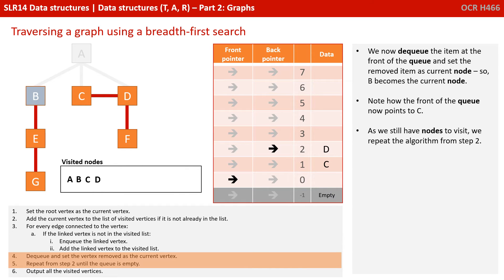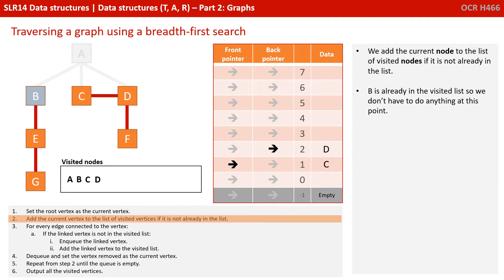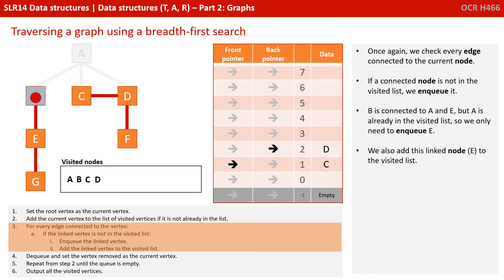We now dequeue the item at the front of the queue and set the removed item as the current node, so B becomes the current node. Note how the front of the queue now points to C. As we still have nodes to visit, we repeat the algorithm from step 2. We add the current node to the list of visited nodes if it's not already in the list — B is already in the list, so we don't have to do anything. We check every edge connected to the current node. B is connected to A and E, but A is already in the visited list, so we only need to enqueue E. We also add E to the visited list.